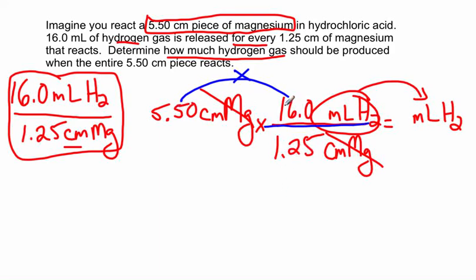So multiply 5.50 times 16, divided by 1.25. And when you're done, it comes out to 70.4, 70.4 milliliters of hydrogen.